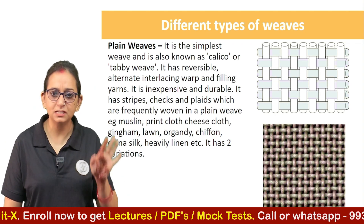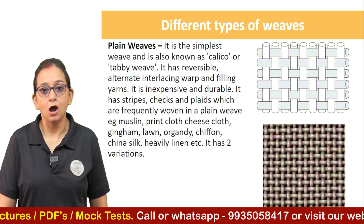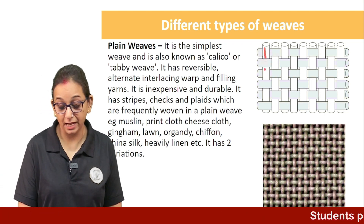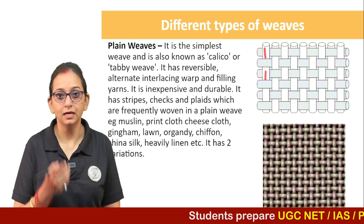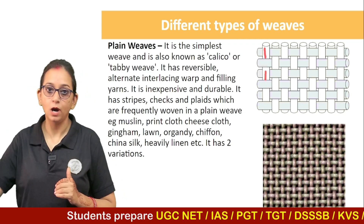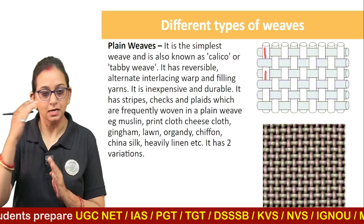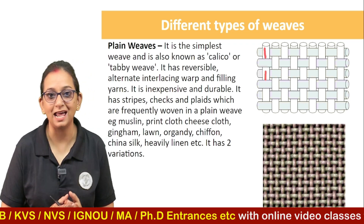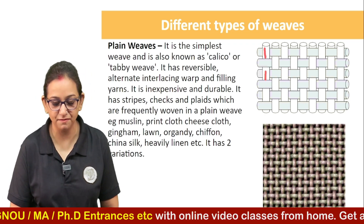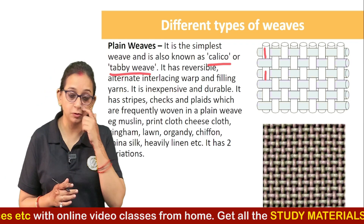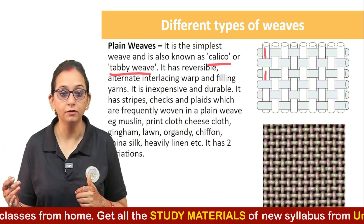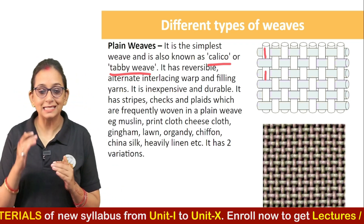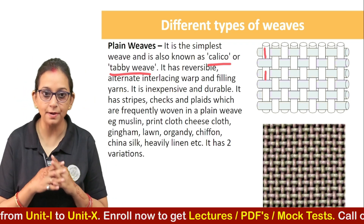First, let's talk about plain weaves — the simplest form of weaves. In plain weaves, the warp thread goes one above and one under the weft thread — above, under, above, under. It is also known as calico or tabby weave. If the question comes that calico or tabby weaves are forms of what, the answer is: they are forms of plain weaves.